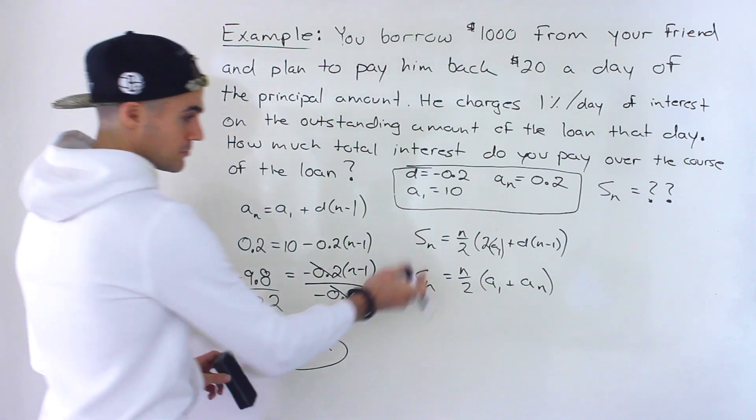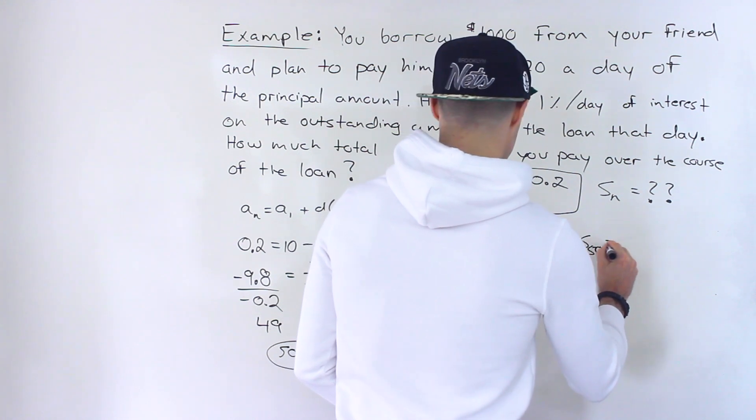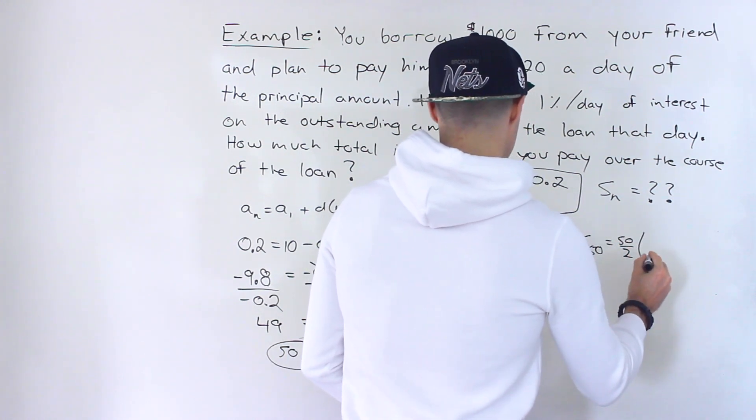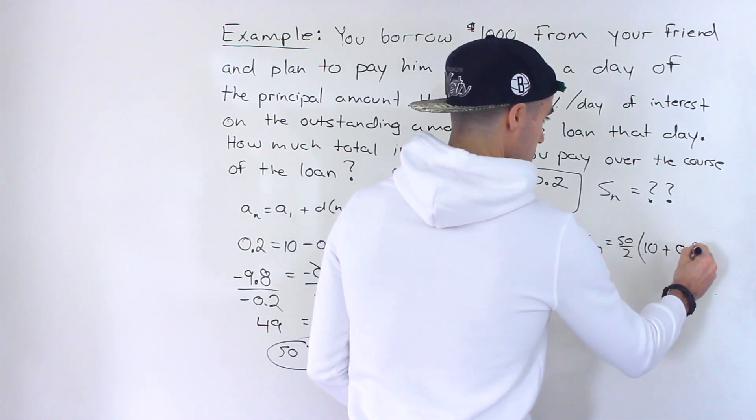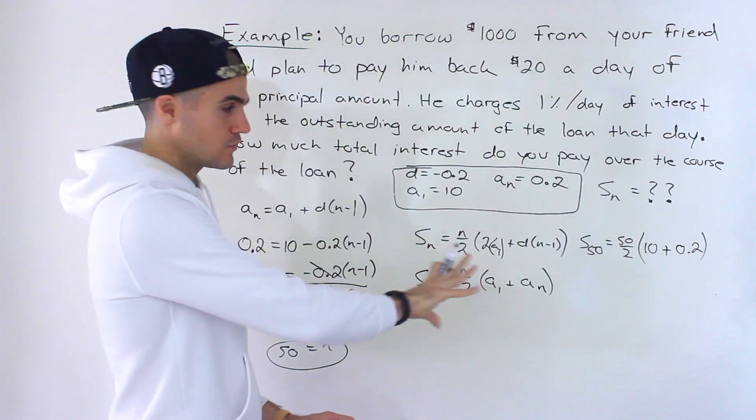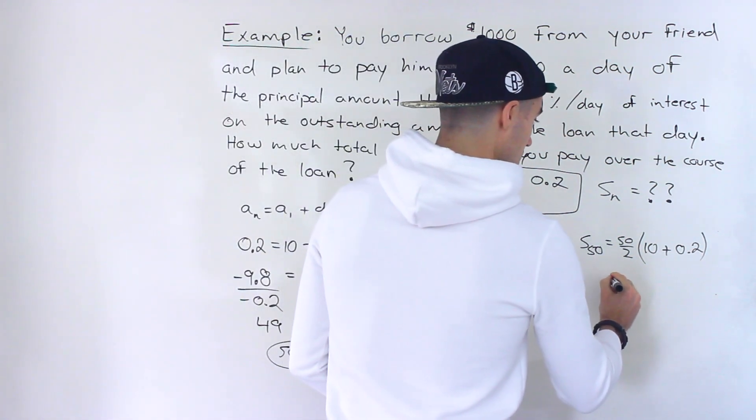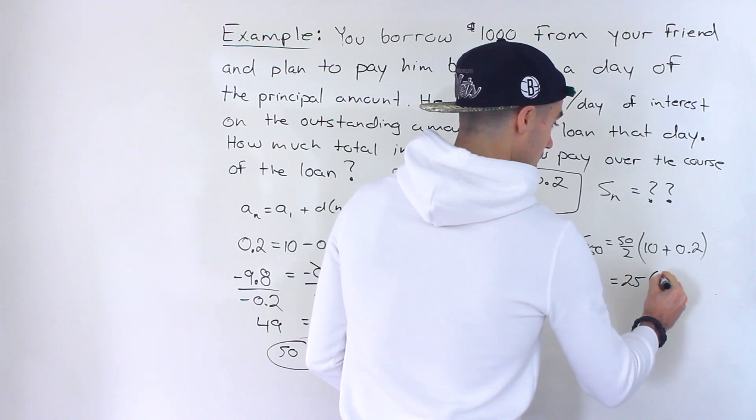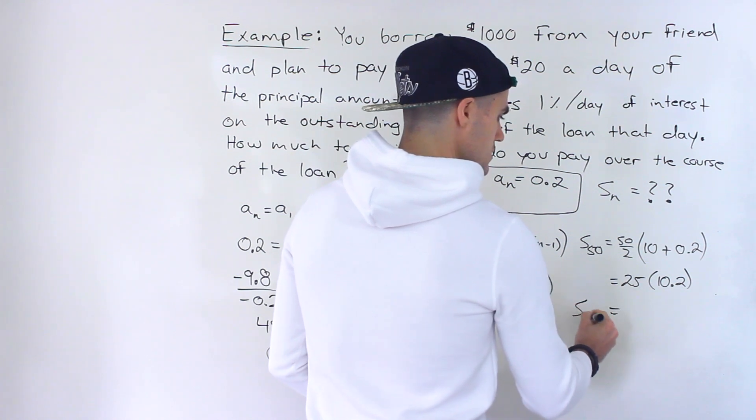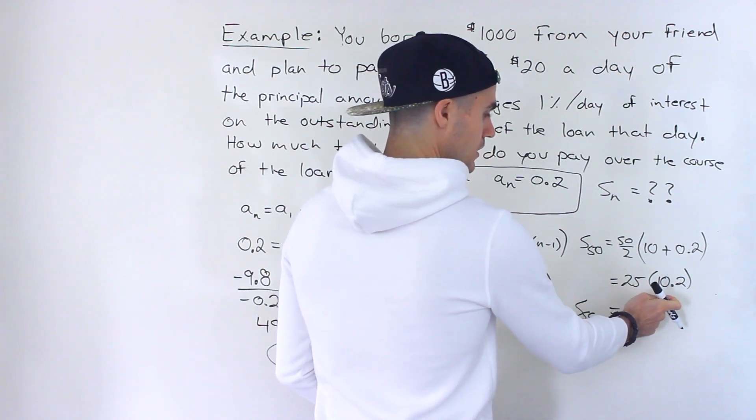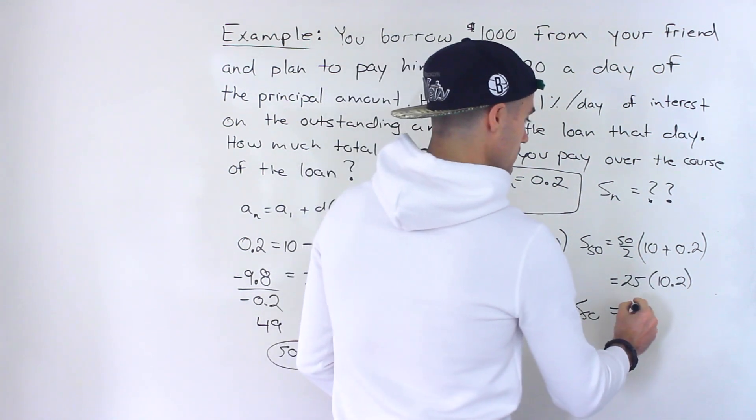So from there, you just have to plug it into either or. I'm going to plug it into this one. So basically, S of 50 would equal 50 over 2, the first term, which is 10, plus the last term, which is 0.2. We're summing up all of those interest payments now. And there are 50 interest payments. So this would end up being 25 times 10.2. And so this would give us, 25 times 10 would give us 250, 25 times 0.2 would give us 5. So this would end up being 255.